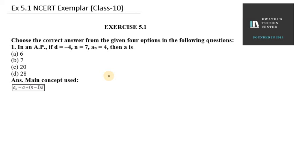Hello everyone, let's start with exercise 5.1 NCERT example. Question number 1 says, in an AP, if D equals minus 4, N equals 7, A_N equals 4.